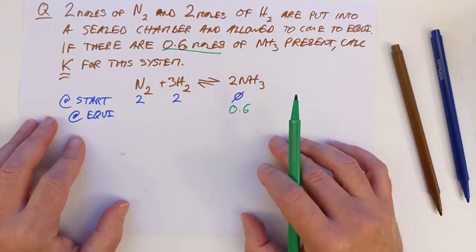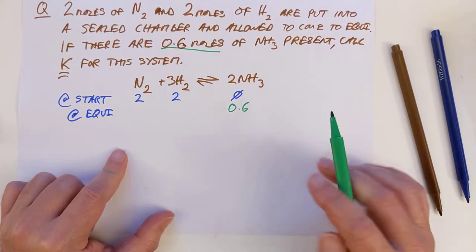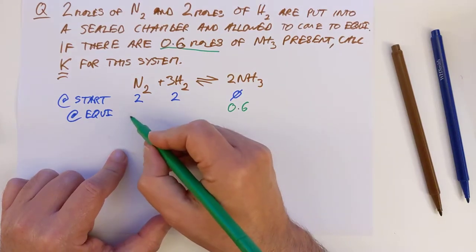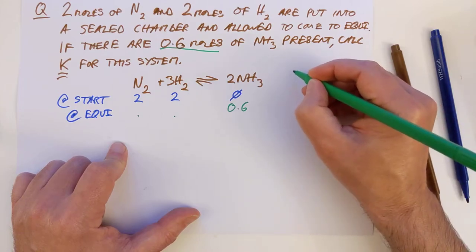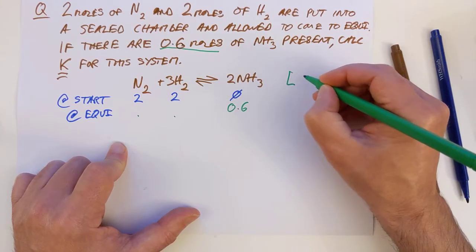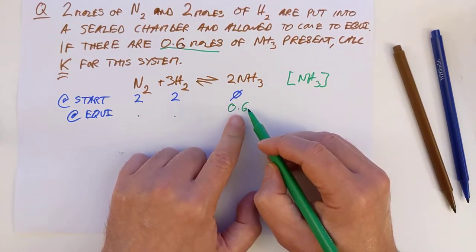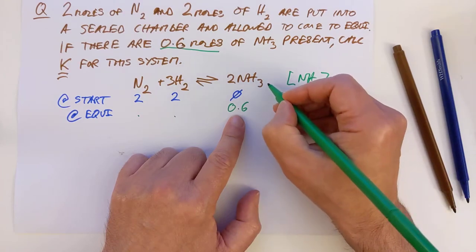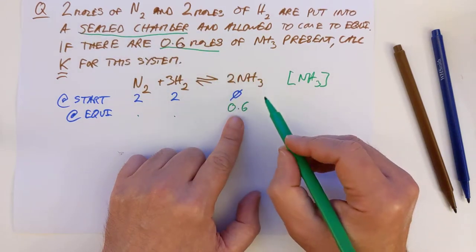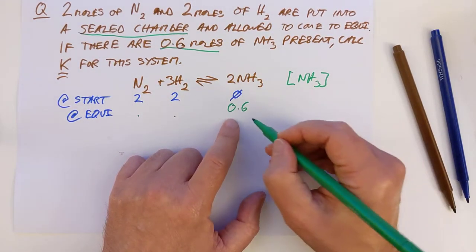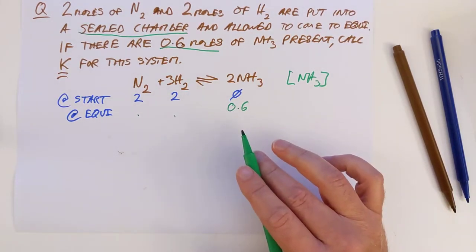Now what I'm going to do is I'm going to have the concentration at the start and the concentration once the system has come to its equilibrium. So initially we have got 2 of this and 2 of this and, shockingly, 0 of that, because the reaction hasn't started yet. Now the real figures here are the ones we need for this line, the equilibrium point, because they are going to be the most important ones. We know that there are 0.6 moles of ammonia present at the equilibrium point because it tells us.